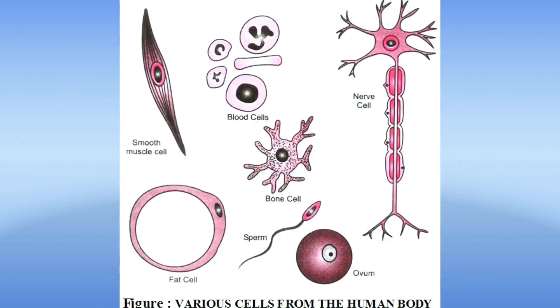Muscle cell is spindle shaped, neuron is just like a cord, then sperm is like a tadpole, etc.